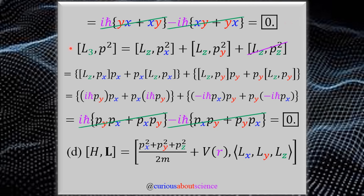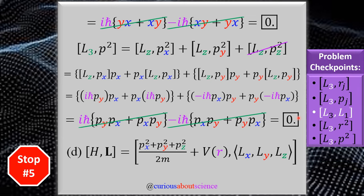Following the same logic for P squared: P² = Px² + Py² + Pz², the PZ term goes to zero as expected. We distribute and apply the commutator results from part A for LZ with all components of linear momentum. Noting that everything has iℏ terms, we factor them out and they cancel perfectly. This concludes both parts of C: [L3, R²] = 0 and [L3, P²] = 0.